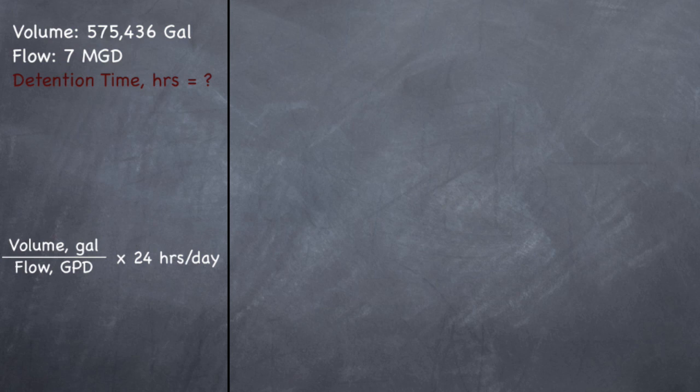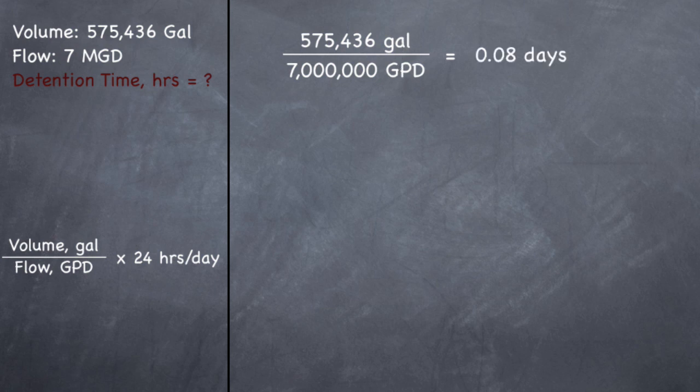So let's write this all out. So we have a volume of 575,436 gallons. And we have a flow of 7 MGD. Now remember, you have to have it in gallons per day. So you need to go ahead and multiply 7 by a million because it's a million gallons per day. And so you wind up with 7,000,000 gallons per day.